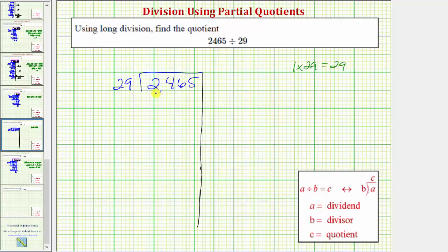But because our dividend is in the thousands, we do want to find larger products. So because 1 times 29 equals 29, we should be able to recognize that 10 times 29 would be equal to 290.